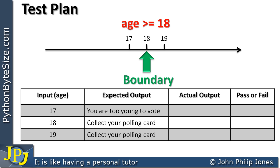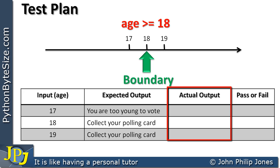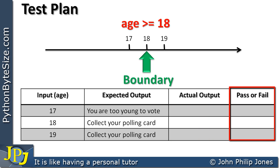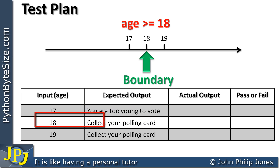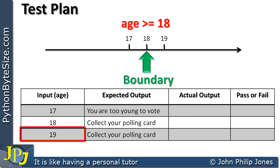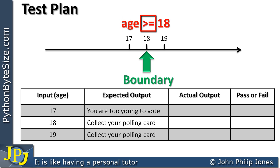It's important we now produce the test plan. I've produced a table with four columns: the input, the expected output, the actual output when the program runs, and whether it passed or failed. When we enter 17 we expect 'you are too young to vote.' When we enter 18 we expect 'collect your polling card.' When we enter 19 we again expect 'collect your polling card.' These inputs relate to the number line, analyzing the boundary around 18, since we ask whether age is greater than or equal to 18.